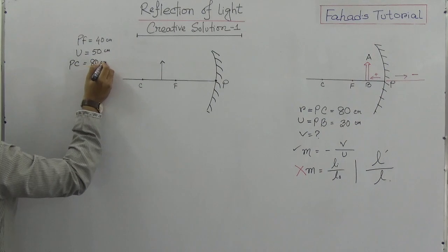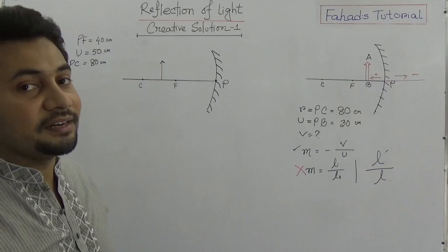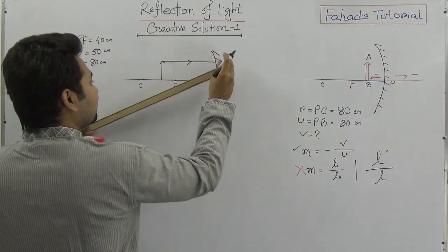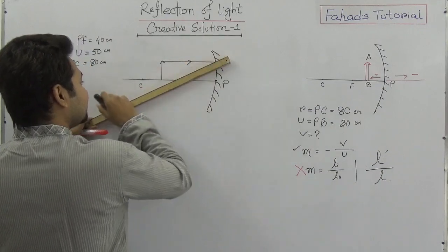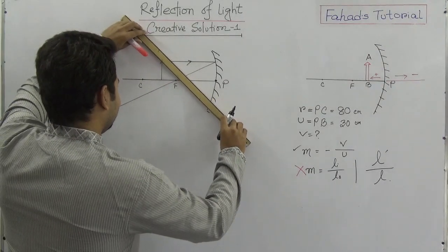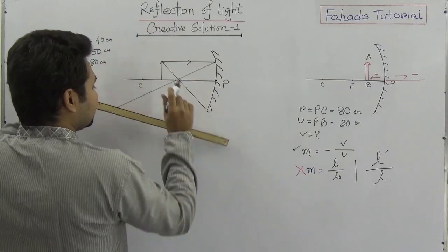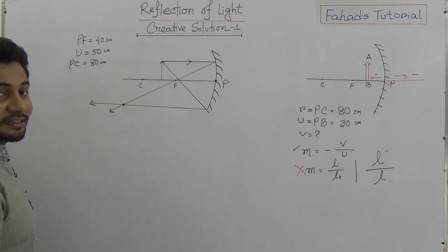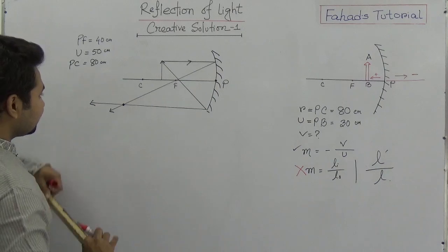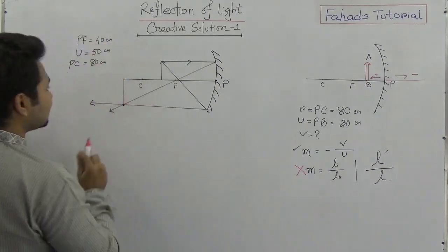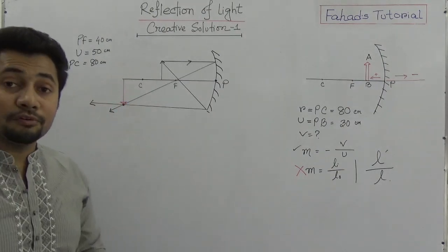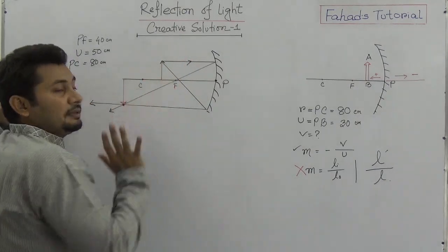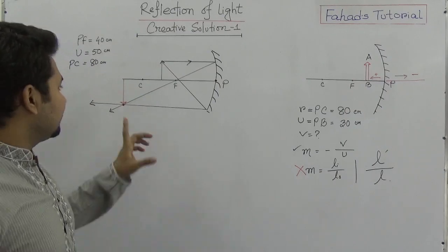From the ray diagram: a parallel ray falls on the mirror and reflects through the focus. Another ray coming through the focus reflects parallel to the principal axis. You can see the image forming beyond C on the same side as the object. The ray diagram shows the image is real and inverted. My picture may not be perfectly accurate, but drawing it with a scale, pencil, and compass would give a more precise result.